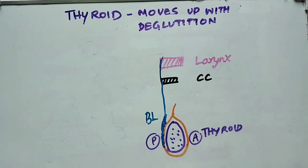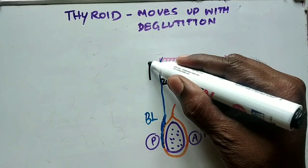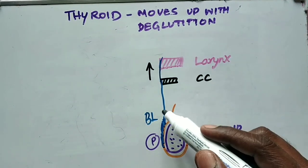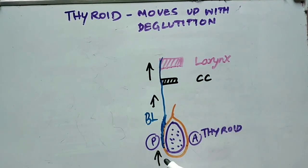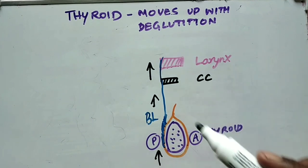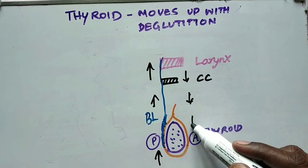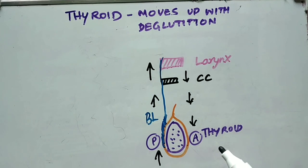As we all know, the larynx will move upward and downward with deglutition. On deglutition, the larynx will move upwards. Since the larynx is moving upwards, Berry's ligament acts like a pulley — this also moves upwards, and the whole thyroid gland is also moving upwards. Similarly, on downward movement it moves downwards. This is the reason why the thyroid gland moves upwards and downwards with deglutition.